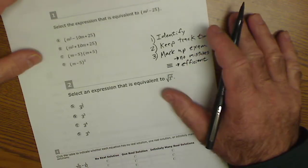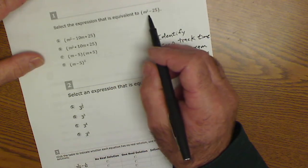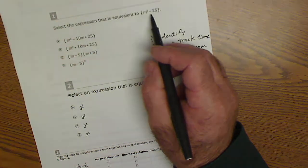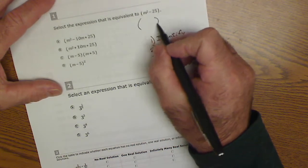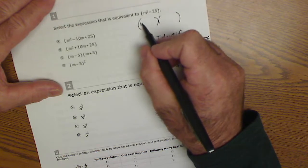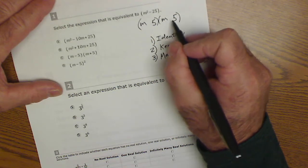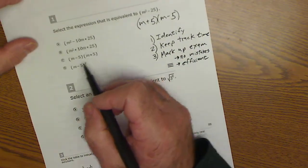So let's take a look at this first one. Select the expression that is equivalent to M squared minus 25. I identify this as factoring. I notice there's no middle term, so it's a perfect square. So I'm just going to split that to factors of M squared or M and M, factors of 25 or 5 and 5, one positive, one negative. I look down at my solutions. There it is.